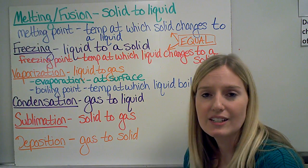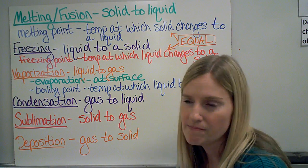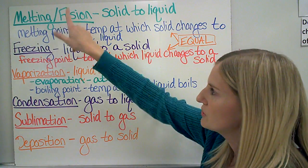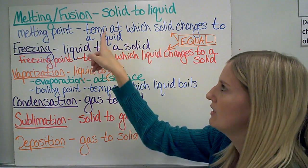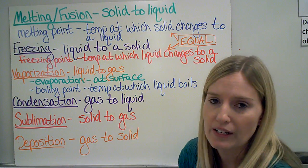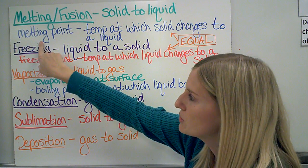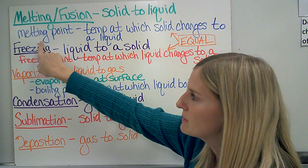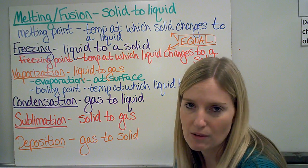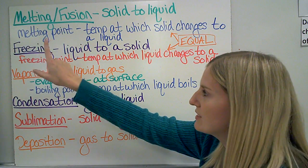There are six types of phase changes. With melting, also known as fusion, a solid is becoming a liquid. The temperature at which this happens is called the substance's melting point.